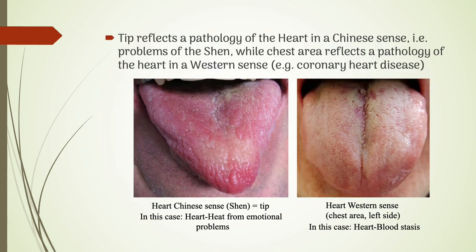The tip reflects a pathology of the heart in a Chinese sense — that is, problems of the shen — while the chest area reflects a pathology of the heart in the Western sense, for example, coronary heart disease. The image on the left shows a case of heart heat resulting from emotional problems, so the tip represents the shen. The image on the right shows heart blood stasis, seen in the chest area in the Western sense on the left side.